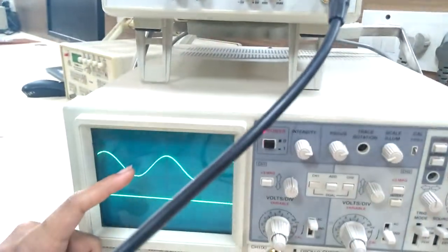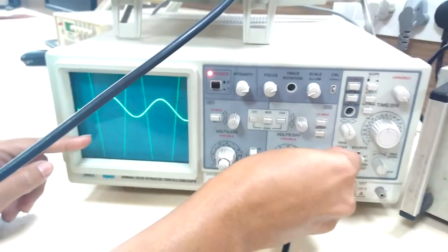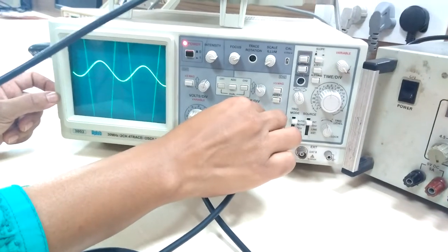You can observe it on CRO. Now we will check output at pin number 6. So you can see this amplified output. So change multiplier.